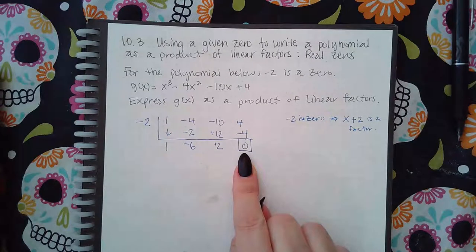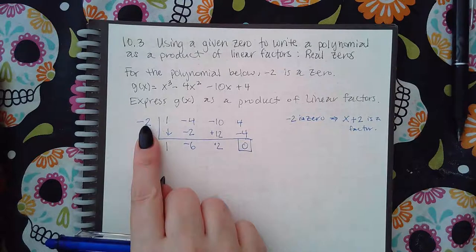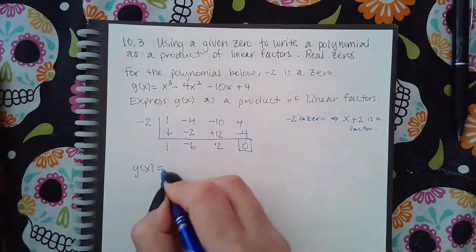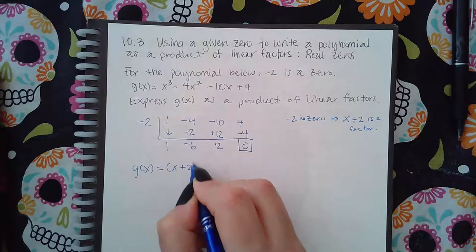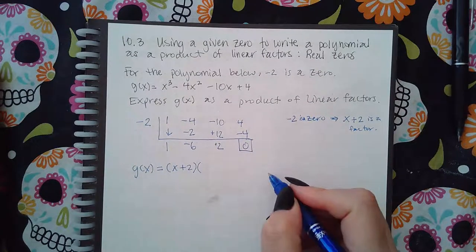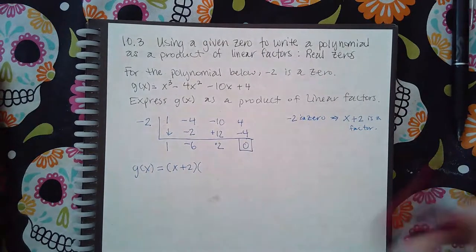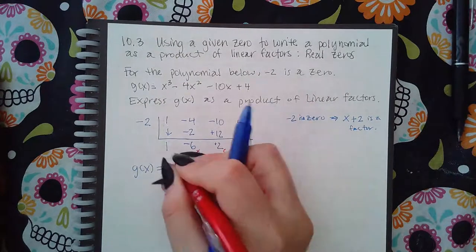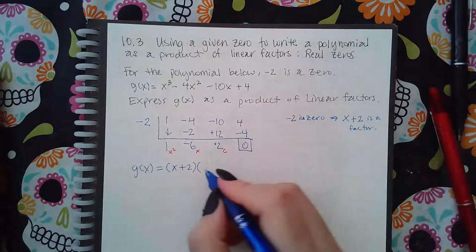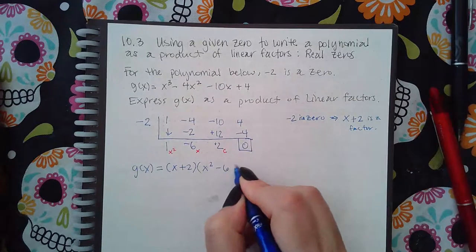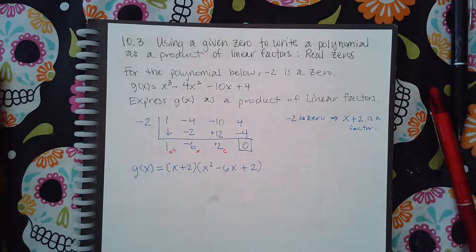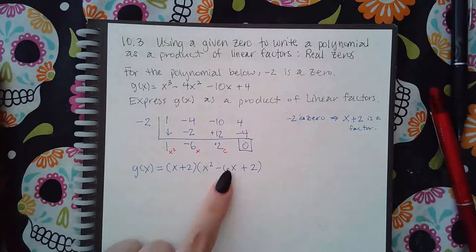So that means that this guy is a factor of that polynomial, which means that polynomial can be written as x plus two times something else. What is that something else? It comes from the quotient part. This is my constant, my x's, my x squares. So x squared minus 6x plus 2. So then now it wants me to factor this.